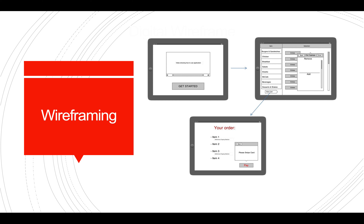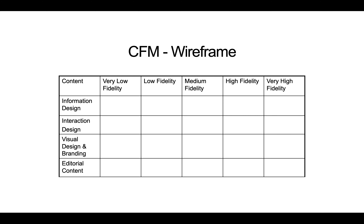You can also do wireframing using digital tools like Adobe Illustrator or your favorite paint program. In this example, we've got layouts of an iPad-type device: a wireframe showing there's going to be a video and a get-started button, and then once you click get started you have screens with further navigation. That's an example of a digital wireframe prototype. Looking at the content fidelity matrix for wireframes: information design is now starting to show — we see how things break down across different screens. Interaction design is also shown because we see how to get from one screen to another. We still don't have visual design and branding — no fonts, color schemes, logos, or icon sets — and there's almost no editorial content; we're just using placeholder boxes to indicate where pictures or videos would be.